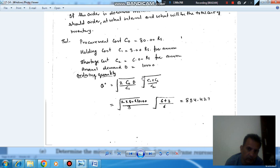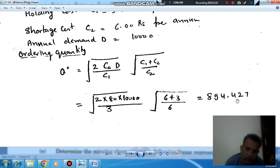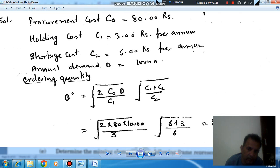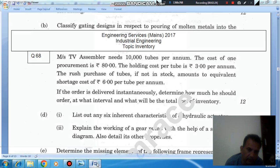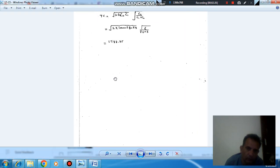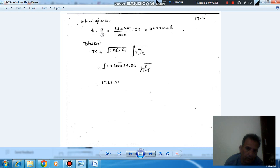The next thing we have to determine is interval and total cost. So, interval of order is 894.427 divided by demand, which is Rs. 10,000 per year or 10,000 by 12 per month. So, Q by D will be the interval of order, and that will be Rs. 1.073 month.